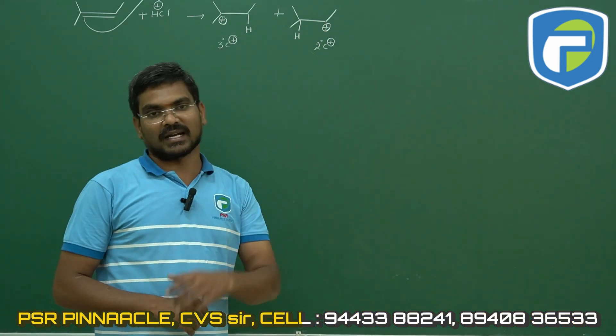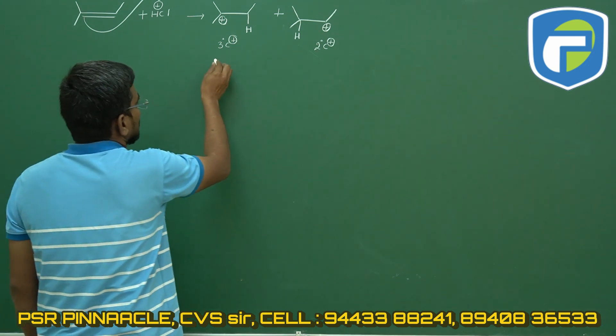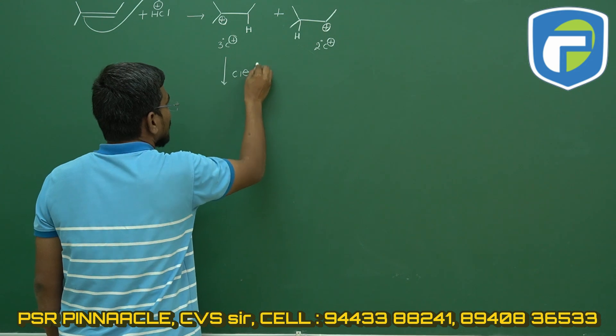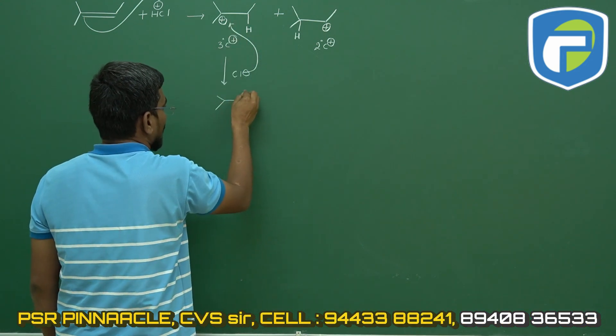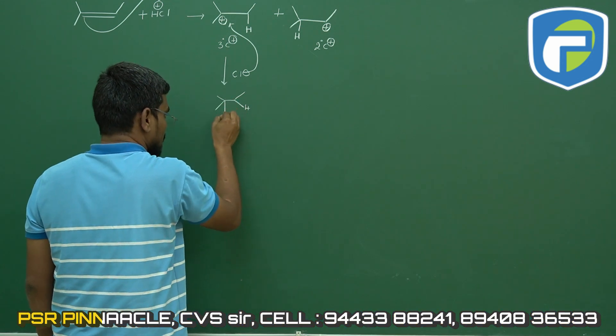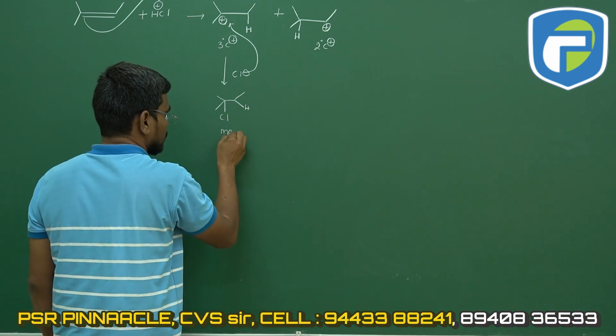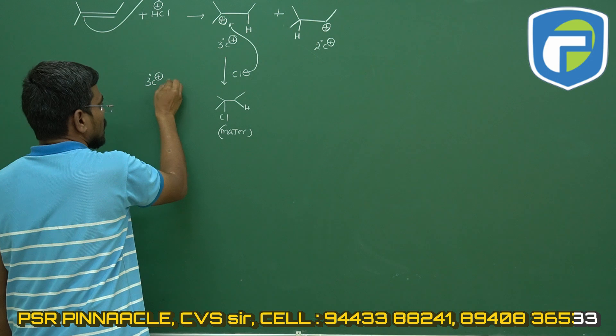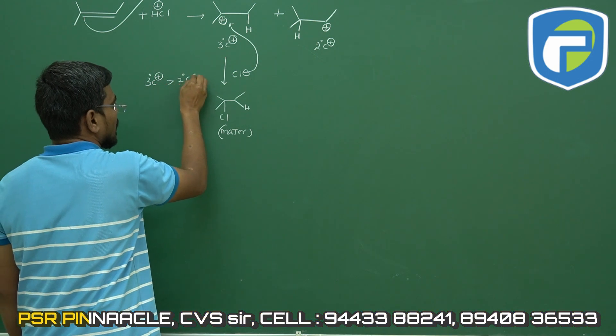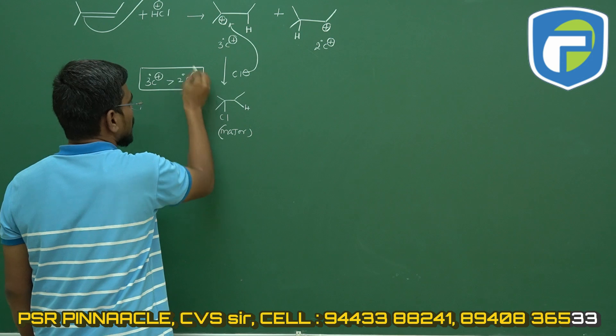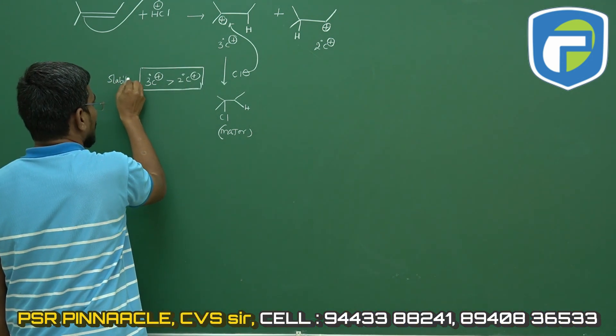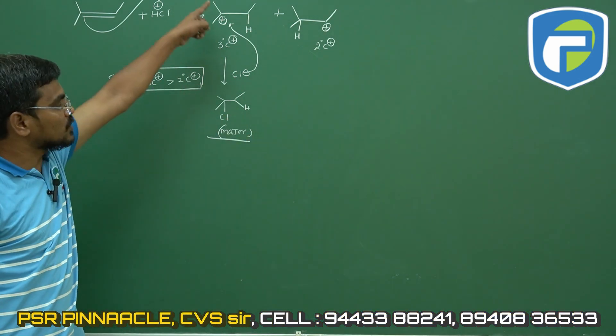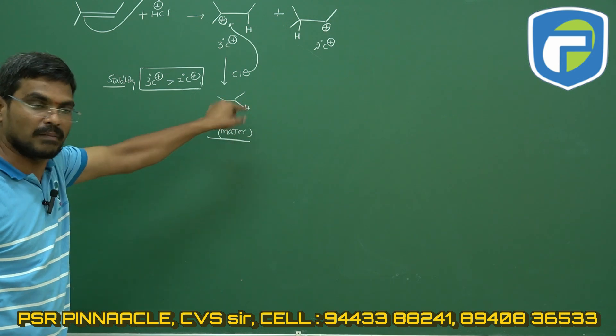When compared with secondary carbocation, therefore this product is taken as major. So this tertiary carbocation is more stable than the secondary carbocation and that corresponding product what we got, that is taken as major. When a more stable intermediate is formed, hence it is taken as major.